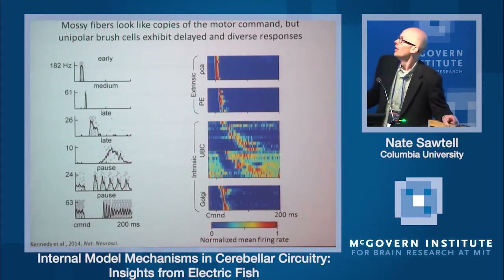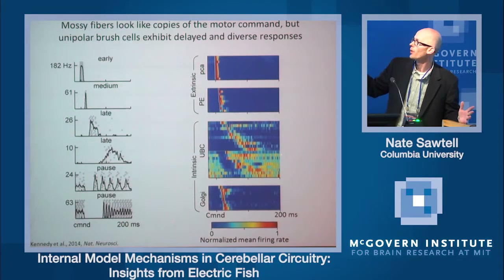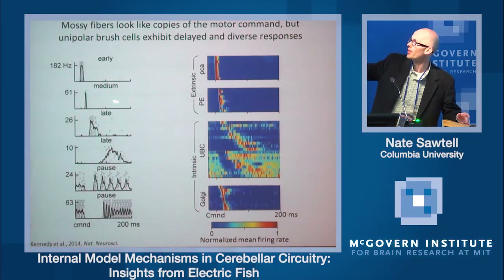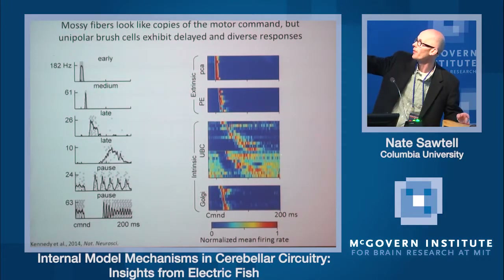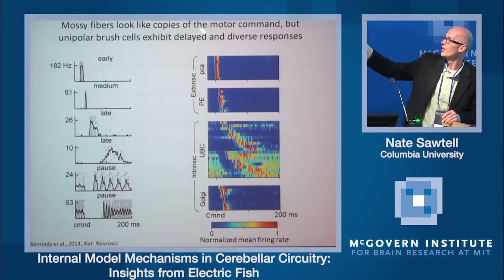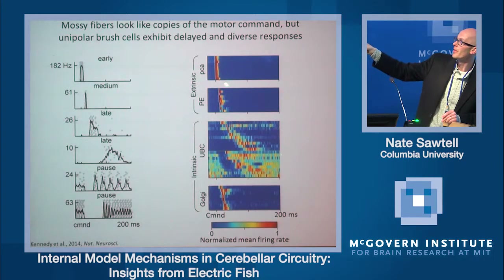When we recorded from the mossy fibers — the inputs from the motor command centers — we saw, as expected, that their responses were restricted in time and highly stereotyped. Inputs from the motor command centers indeed resemble literal copies of the motor commands. Interestingly, as we recorded inside the granular layer, which we call EGP, we found these early responses, but in addition, responses that were more temporally diverse and delayed.